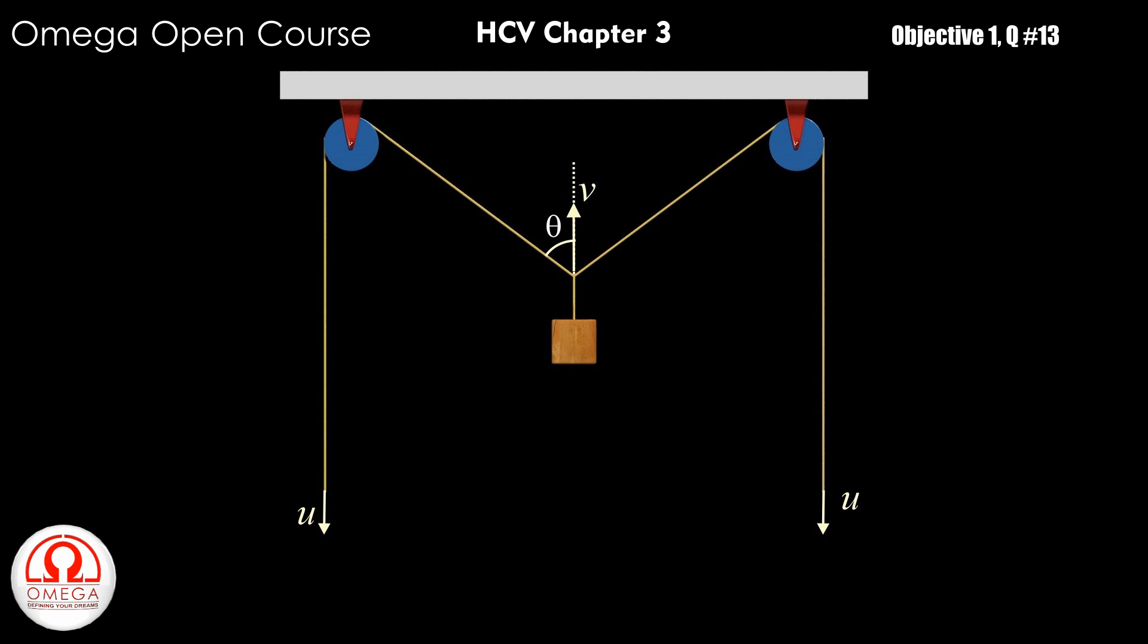Therefore, the velocity makes an angle theta with the string. Hence, its radial component is vcos theta.